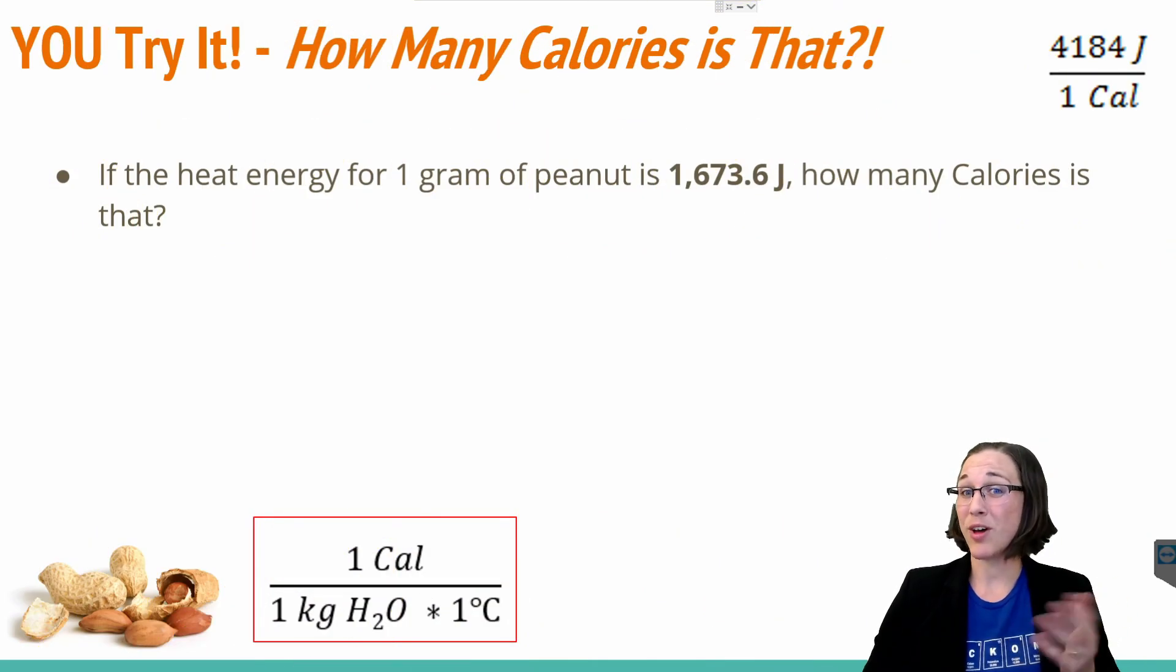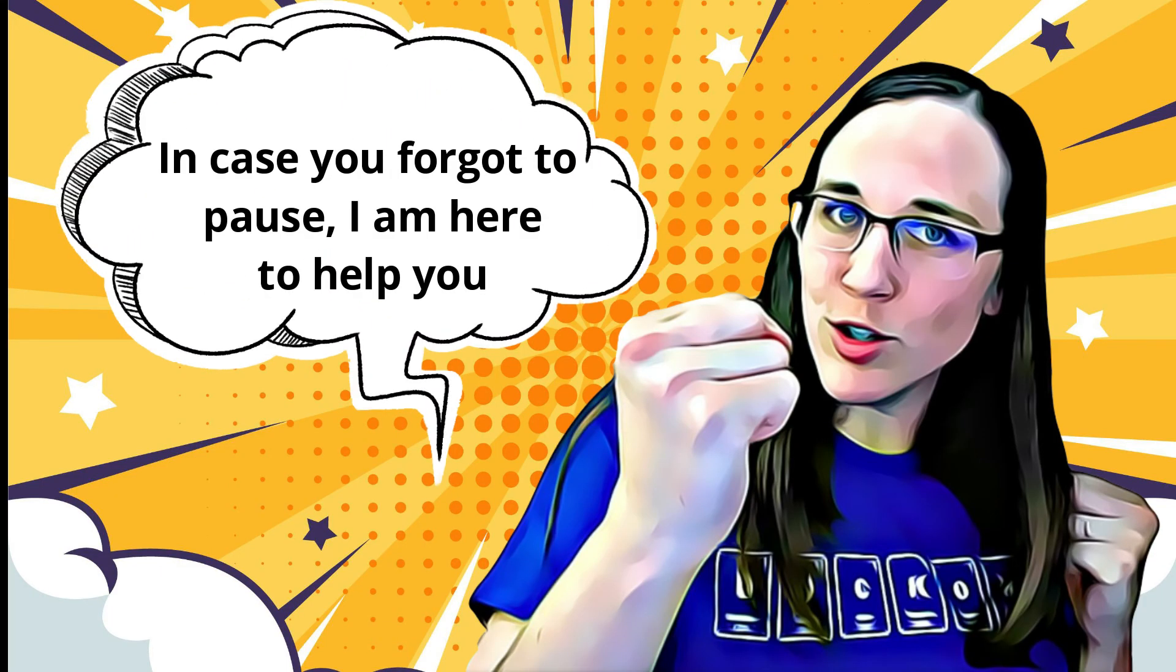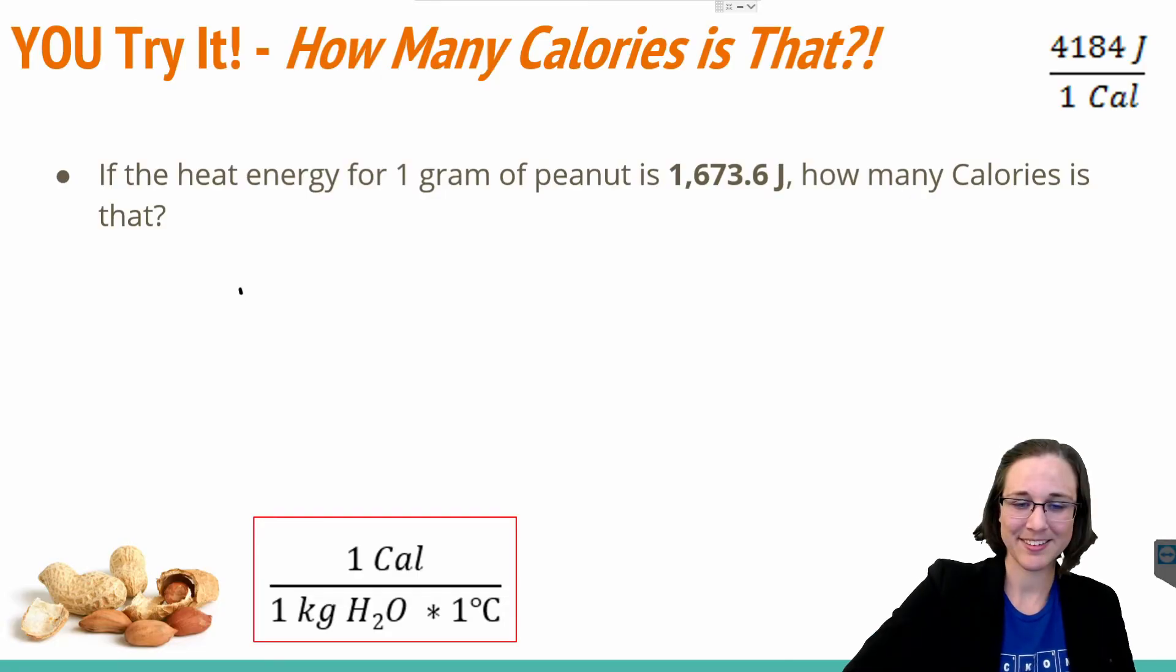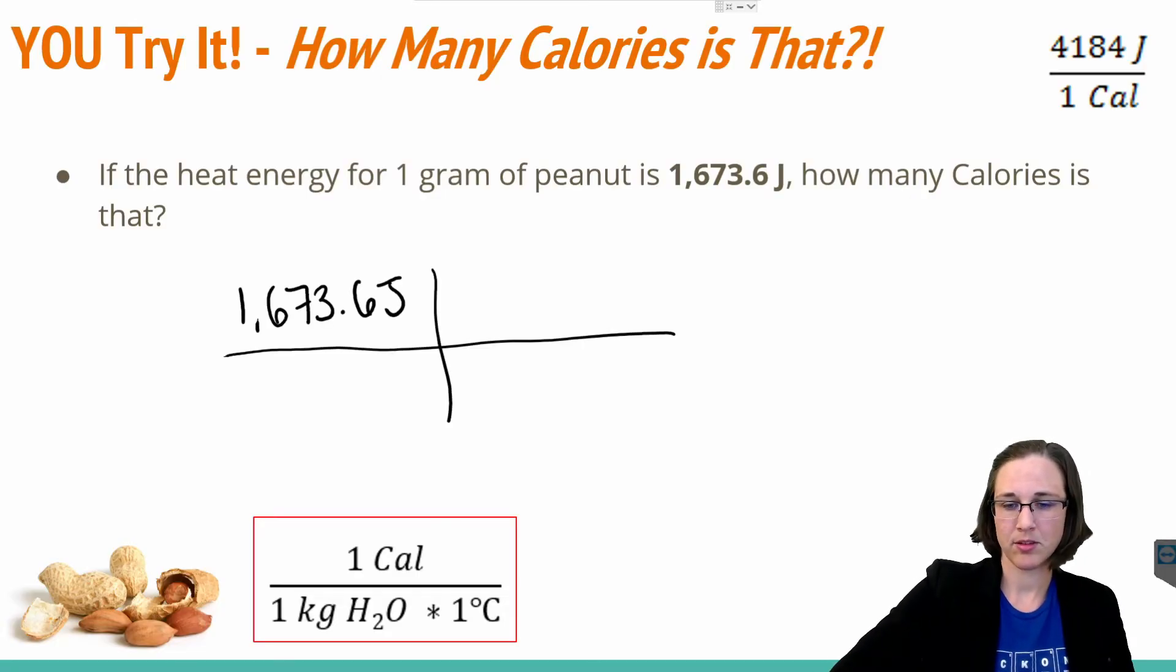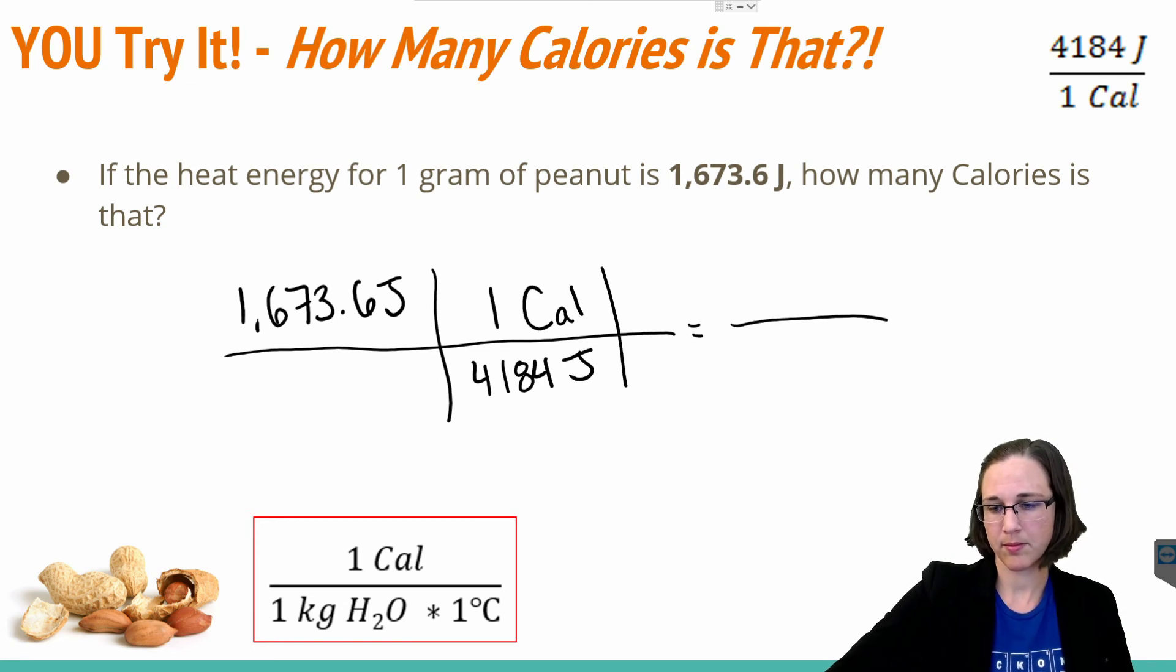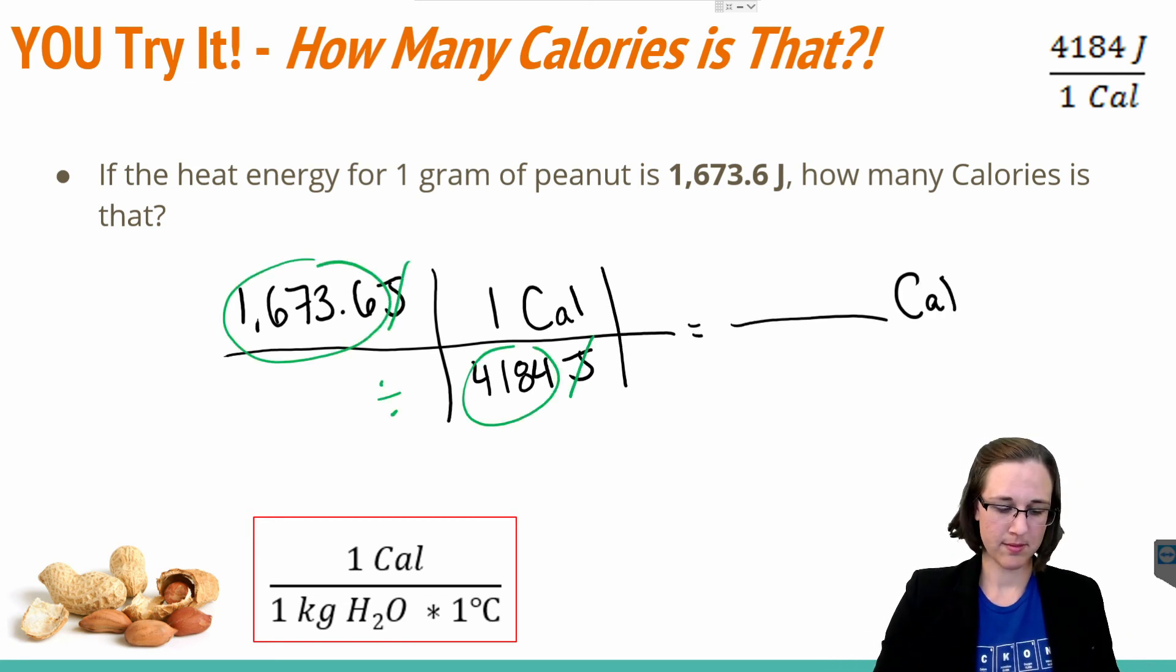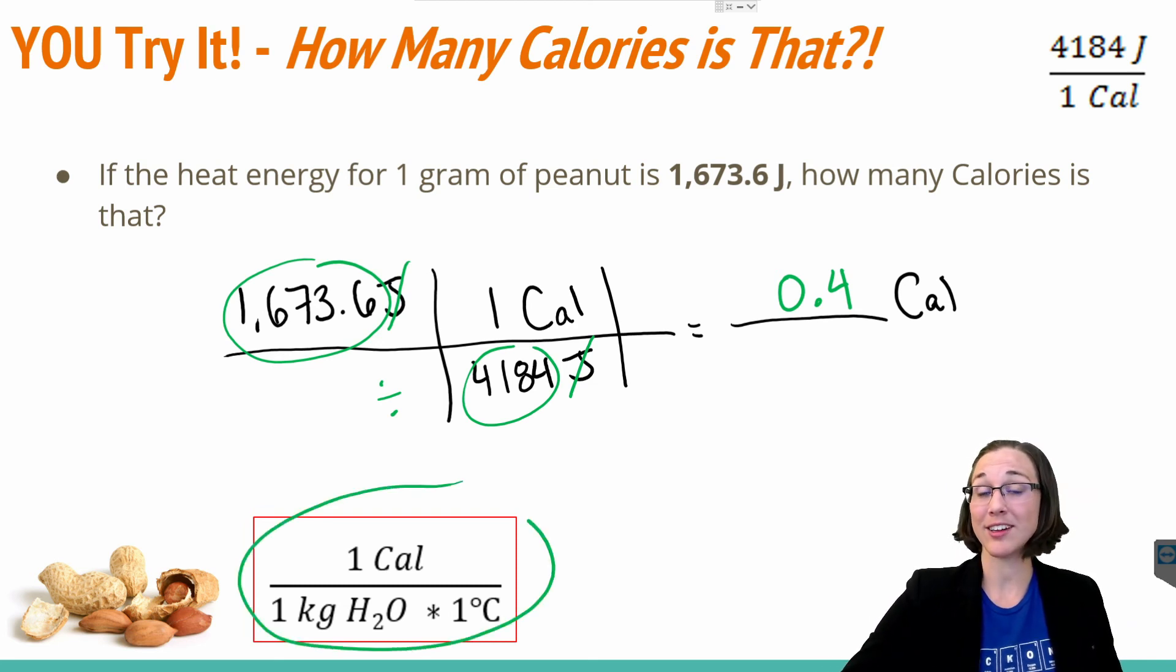We already calculated that there was 1,673.6 joules in one gram of peanut, so go ahead and figure out how many calories is that. Pause the video now. And you should have gotten 0.4 calories in your one gram of peanut. Again, if you'd like to see how to use this conversion factor instead, stick around until after the outro and I'll show you.